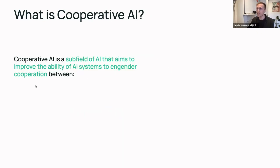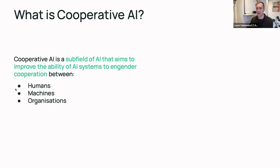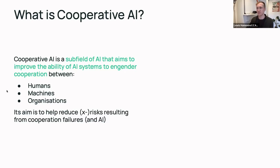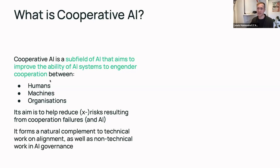The way I define cooperative AI is as a subfield of AI that aims to improve the ability of AI systems to engender cooperation between humans, machines, and organizations — where organizations can be thought of broadly as groups of humans and/or machines. The overall aim is to help reduce risks, potentially existential risks, resulting from cooperation failures, which I think are increasingly likely to involve AI in the future for better or worse. In that sense, it forms a natural complement to technical work on alignment as well as non-technical work in AI governance.